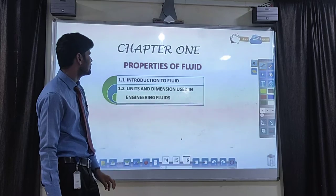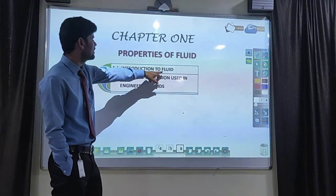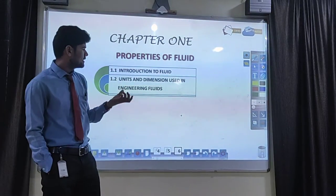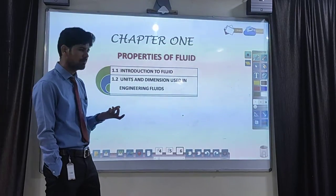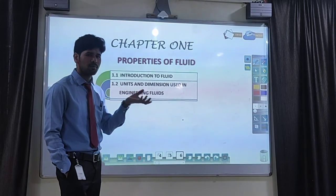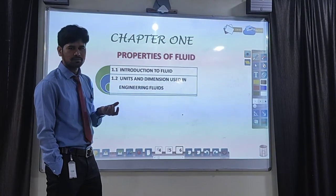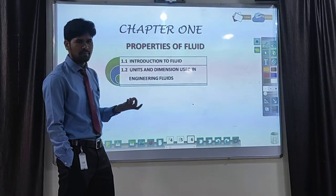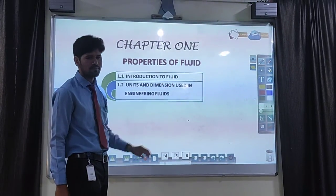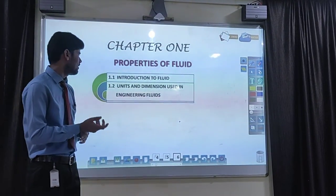Chapter one: introduction to fluid. First, what is the meaning of fluid? And what is the meaning of mechanics? Fluid is a substance — it can flow. That is the basic fundamental definition of fluid. Fluid is the substance that can flow. Substance means it occupies space, it can occupy a volume, and it has its own properties. Any substance that can flow is called a fluid. Mechanics deals with the corresponding data of various kinds of forces and forces on a mechanism.